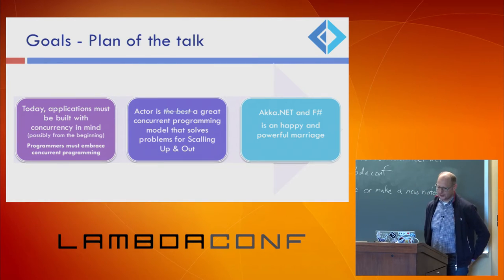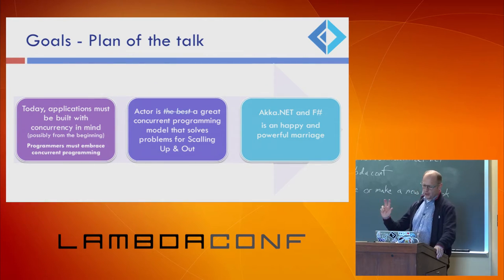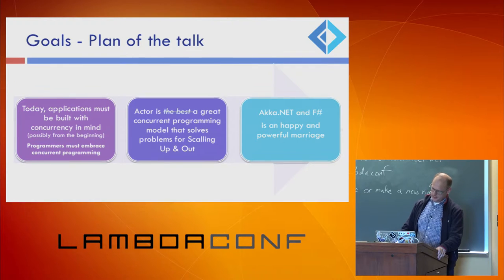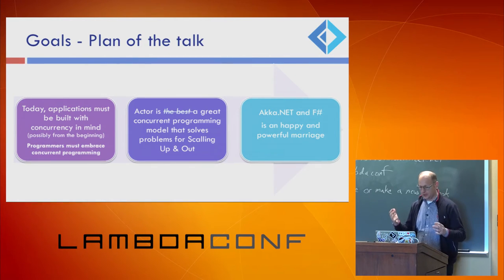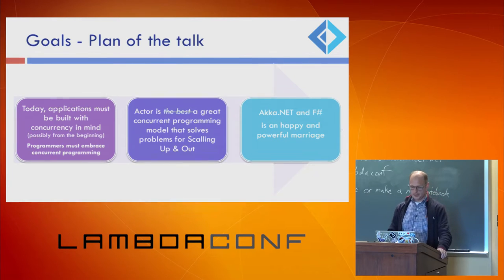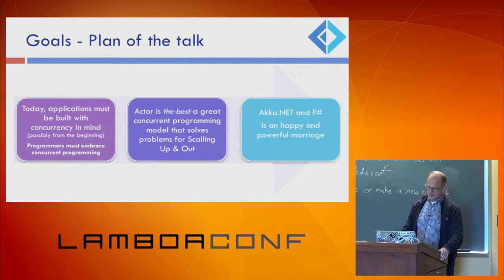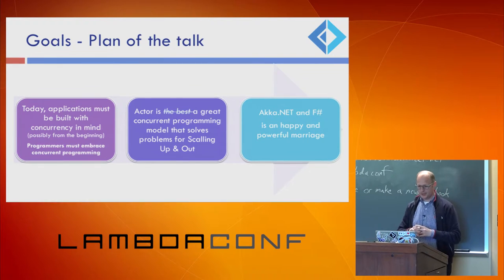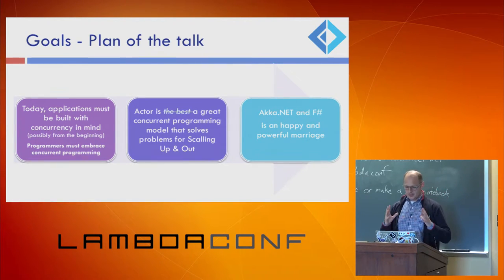I'll cover a lot of material, but there are three primary objectives I want you to take away. One is that today, more than ever before, applications must be built with concurrency in mind, possibly from the beginning. The actor model - I'm biased, but I think it's a great concurrent programming model to solve both scaling out and scaling up. And ultimately, Akka.NET and F# are a very powerful combination of these two technologies.